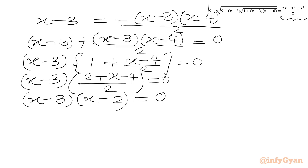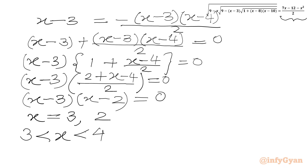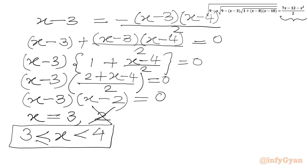For our equation x should lie in the interval 3 and 4 for solutions to be real. So we are going to reject x equals 2. Since equality holds true at the boundary, x should lie in the interval included 3 and excluded 4. So our final answer becomes x equals 3.